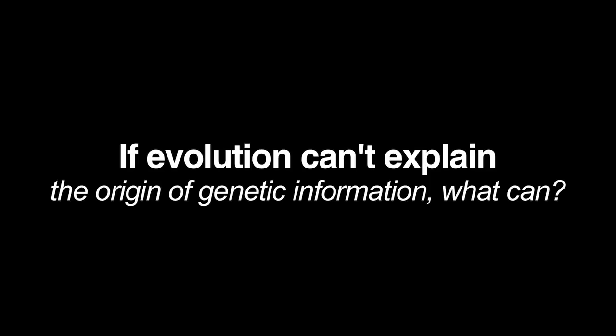As it has become clear that the various evolutionary mechanisms do not account for the origin of genetic information, people have naturally wondered what might. We've proposed an alternative explanation: the idea of intelligent design. The reason intelligent design provides a good scientific explanation for the origin of new information necessary to build new proteins and new forms of animal life is that we know from our experience that information always arises from an intelligent source.